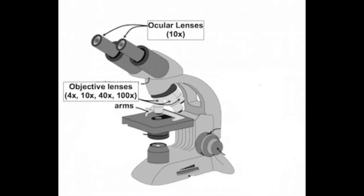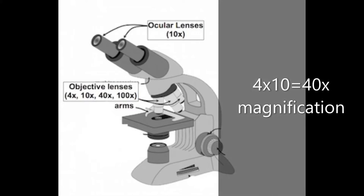Take a look at the ocular lenses. They also have the magnification written on them, 10 times magnification. So this means when you're looking at a slide under the scanning objective lens, you're seeing it at 40 times larger or 40 magnification.